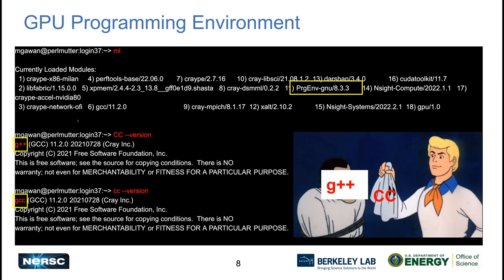The compiler wrappers make things really easy. Let's say you want to build a code using GNU compilers — you'd normally use G++ for a C++ code. But when building a GPU code, there are many libraries to link that could be spread all over the place. Rather than finding each path manually, you use the compiler wrappers. Regardless of the loaded programming environment, the compiler wrapper will call the right compiler and link all required libraries.